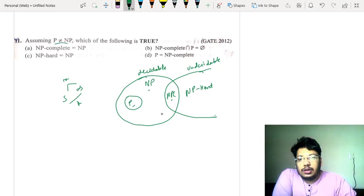Assuming P is not equal to NP, which of the following is TRUE? This is the question of GATE 2012.